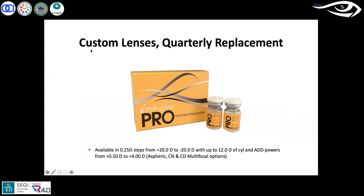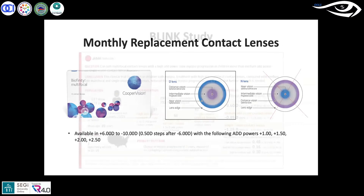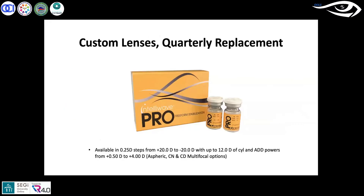Historically we had trouble fitting patients with astigmatism into myopia management devices, but as of last summer, CooperVision gave extended parameters for the Bioaffinity lens so we can now fit almost any patient with astigmatism. In my clinic I've also been using the IntelliWave Pro, a custom soft lens with up to minus 20 with 12 diopters of cylinder. If an extreme patient can't be fit in the Bioaffinity, we can fall back on the IntelliWave, though there's no specific IntelliWave clinical trial yet.